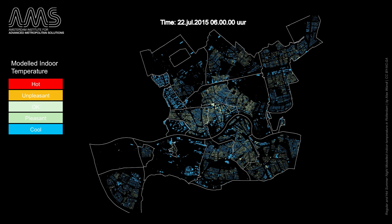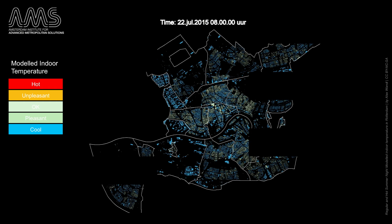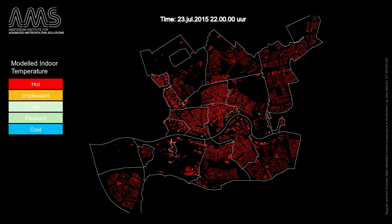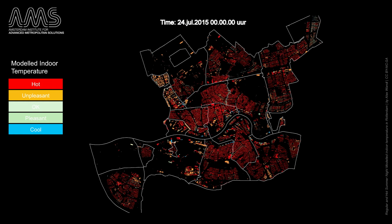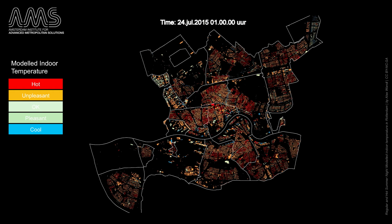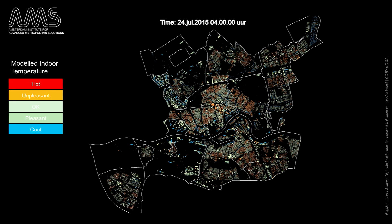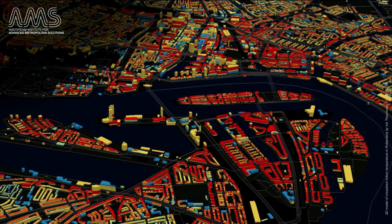You first see the temperature during a regular night where the city still cools down, and now during a night in a heatwave where the city doesn't cool down. Or you can visualize temperatures in 3D, as this view over Rotterdam shows.